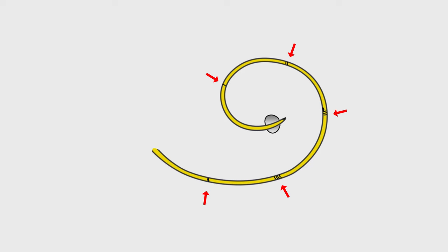A Swan-Ganz catheter is usually 110 cm in length. A balloon surrounds the tip of the catheter. The catheter is marked at 10 cm increments from the tip to aid insertion.